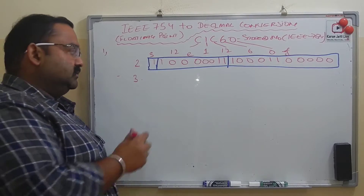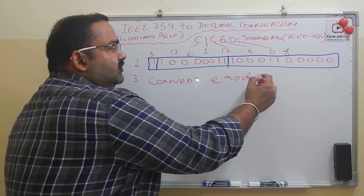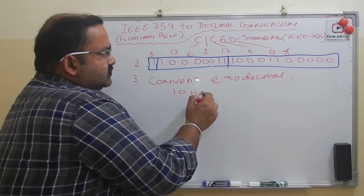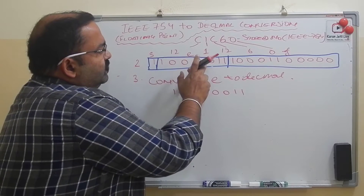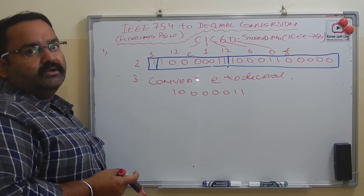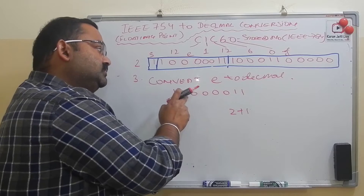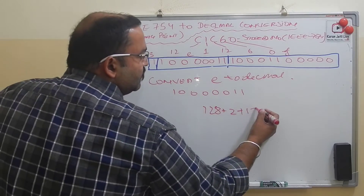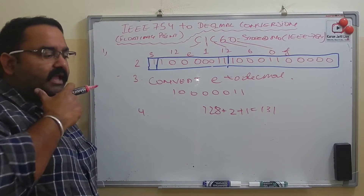Step four: take the exponent part and convert it to decimal. The exponent bits are 10000011. Converting to decimal: 1 + 2 + 0 + 0 + 0 + 0 + 0 + 128 — that gives us 131.